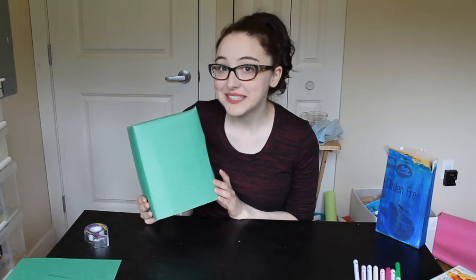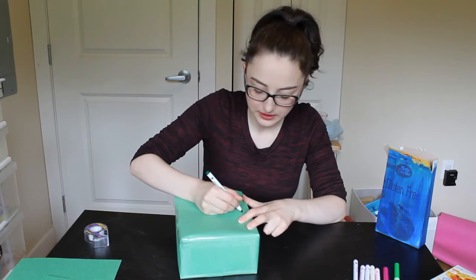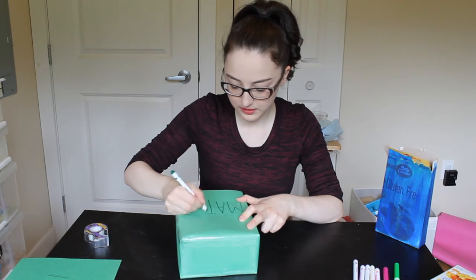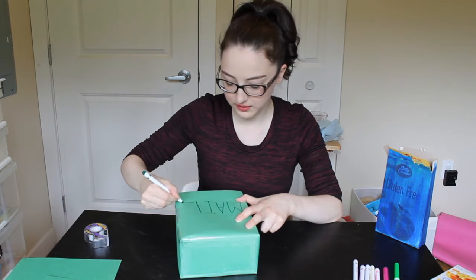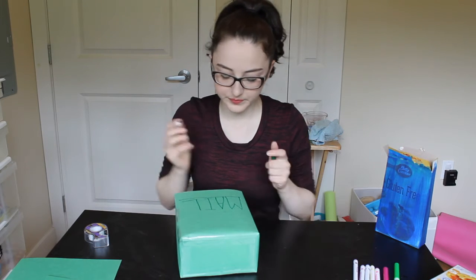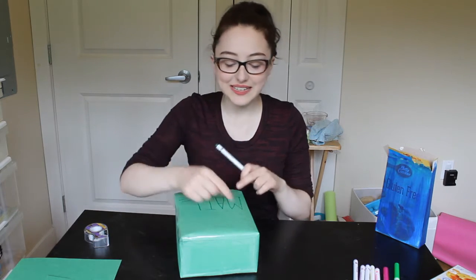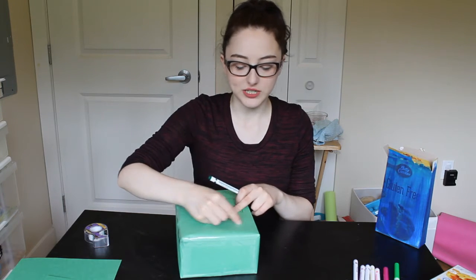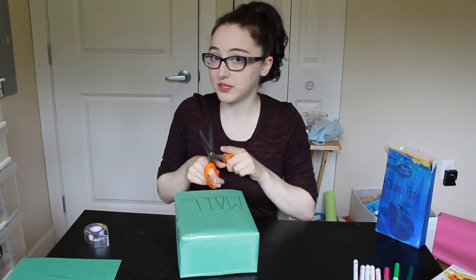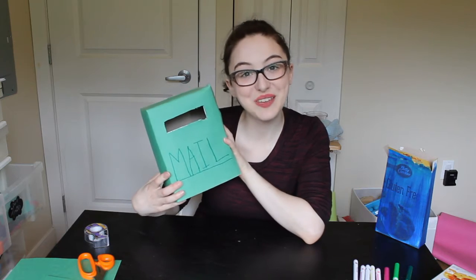And once your mailbox is all covered in construction paper then you can decorate it. You can color with markers or add some stickers. I think I am going to write on mine. I am going to write mail on it. And then what you are going to want to do is you are going to get mummies and daddies to cut out a little slot in it so that you can insert your letters. Now it is very important to get mummies or daddies to do this part. And then you have a little mailbox that you can put letters in.